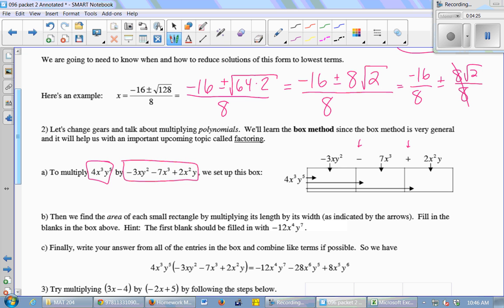Then I'm going to find the area of each small rectangle by multiplying its length by its width. So in this first box, I want to multiply 4x cubed y to the 5th times negative 3xy squared. So let's just multiply the numbers first. What's 4 times negative 3? Negative 12. And then I'll do the x's. x cubed times x, what is that? x to the 4th. And then the y's, y to the 5th times y squared? y to the 7th. Good.